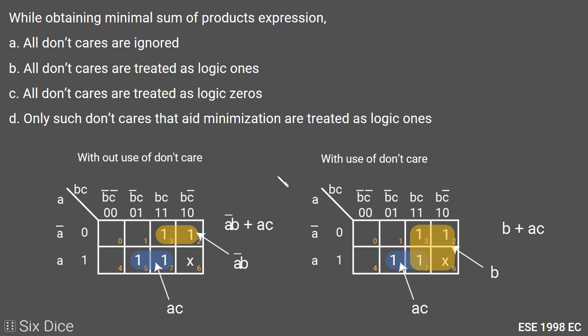In product of sums, we minimize by making pairs and quads of zeros. That's why in product of sums we treat don't care as zero, and in sum of products we treat don't cares that aid minimization as logic 1. So the answer to this question is option D.